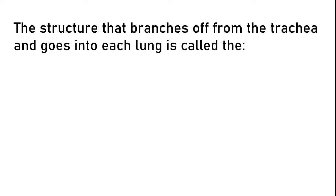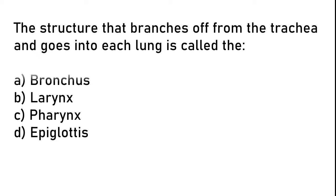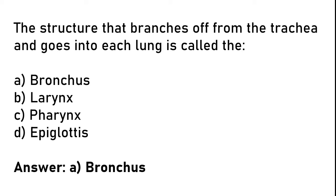The structure that branches from the trachea and goes into each lung is called the: (A) bronchus, (B) larynx, (C) pharynx, (D) epiglottis. The correct answer is option A: the structure that branches from the trachea and goes into each lung is called the bronchus.